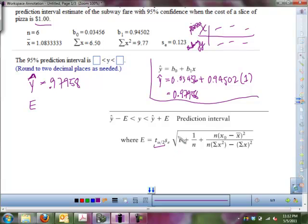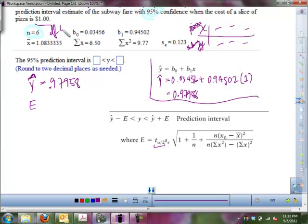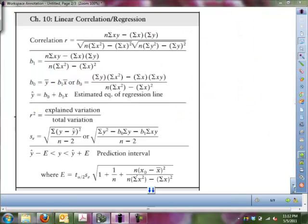So, how do we find that? We look at the 95% confidence, and we know that n is equal to 6, or degrees of freedom will be equal to 6 minus 2, which is 4. And with 95% confidence, we're looking at 2 tail with 0.05. So, let's look at our table real quick.